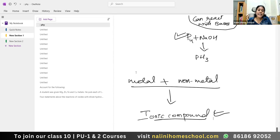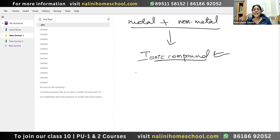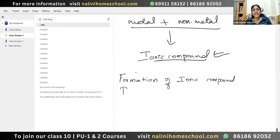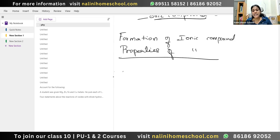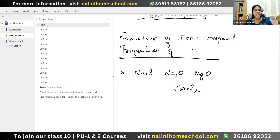In the next part, we are understanding the formation of ionic compound — this is important — and also the properties of ionic compound. These are the things we have to discuss. So they will ask you in the exam: explain the formation of NaCl, explain the formation of sodium oxide, explain the formation of MgO, calcium chloride. All these are examples of ionic compounds.